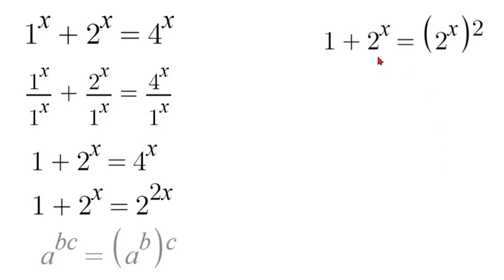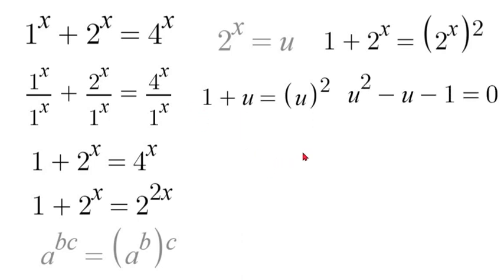Now that we have that we can substitute our 2 to the power of x for the letter u. So we'll say 2 to the power of x is equal to u. So that means we'll have 1 plus u is equal to u squared. We'll subtract our u and subtract our 1 and we'll have u squared minus u minus 1 is equal to 0.